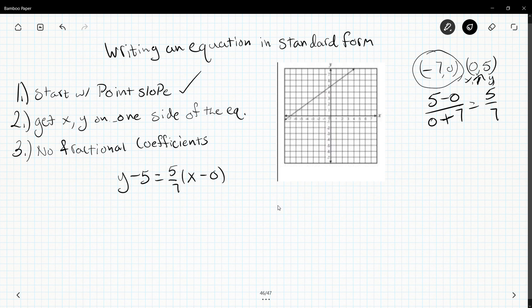Next, if I want to get x and y on one side of the equation, I need to distribute 5/7 to both x and the zero. I know this one really doesn't matter, I'm just making a point. So I get y minus 5 equals 5/7 x.